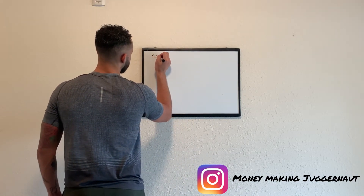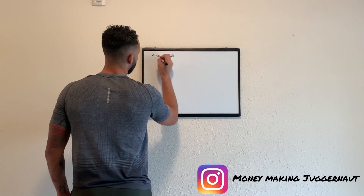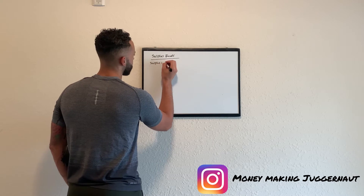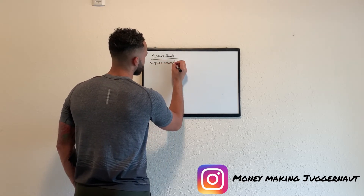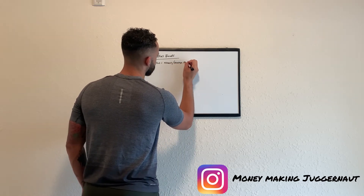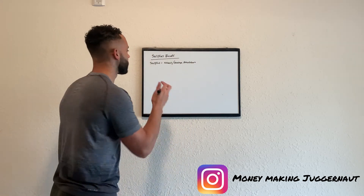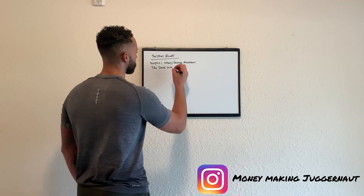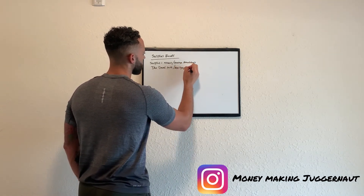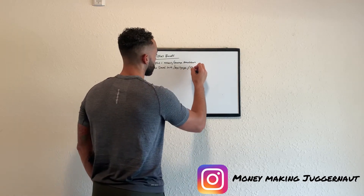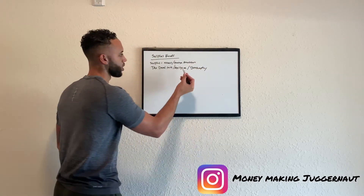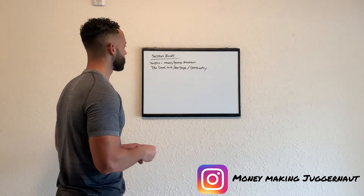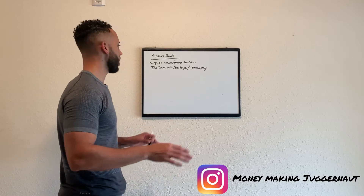So — surplus funds. It's a surplus, which means excess funds or an overage from a foreclosure. Now this can be either a tax deed sale, or it can be a mortgage foreclosure. It could also be bankruptcy. You can make money in those ways, but I don't do those — I stick to tax deed sales. There's also tax lien sales where the owner has time to redeem the property, but I don't go after that. I go after tax deed sales. It's the simplest.